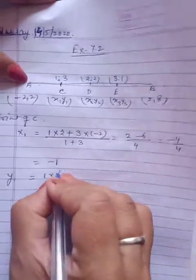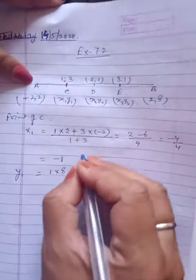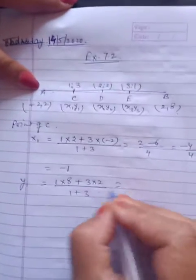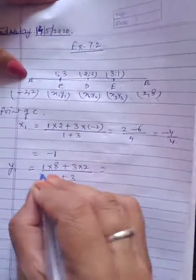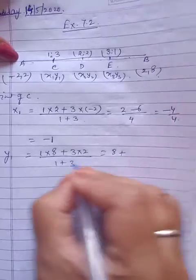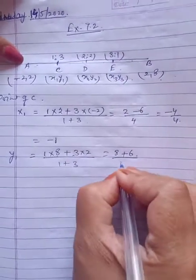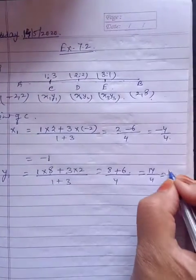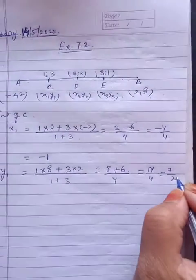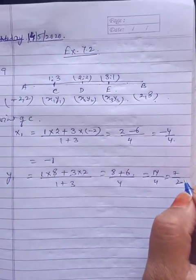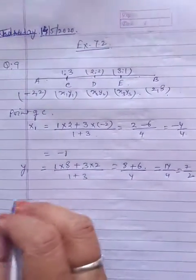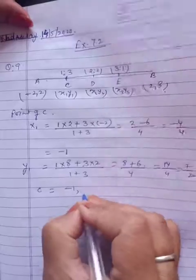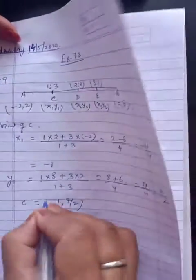Y1 का same वोई formula: 1 into 8 plus 3 into 2, divided by 1 plus 3. 8 plus 6 = 14 upon 4, then it means 7 by 2. So the point of C is: C = (-1, 7/2). यह हमारे C के points हैं।